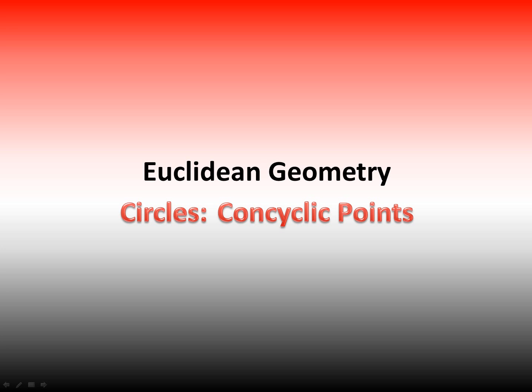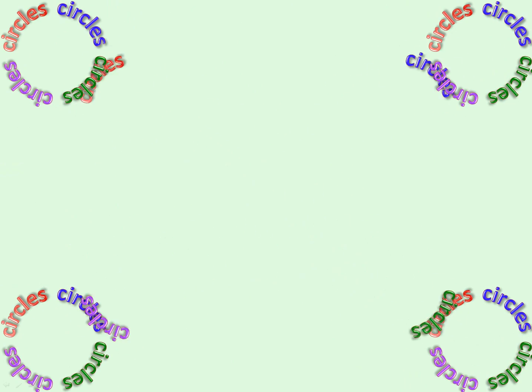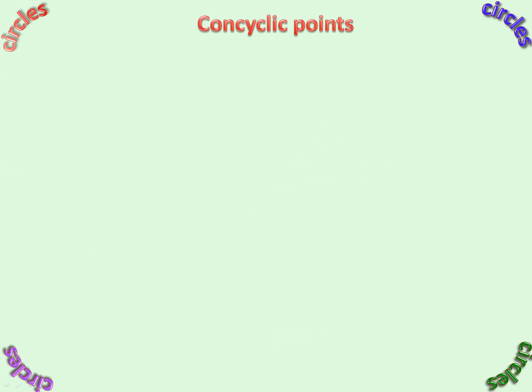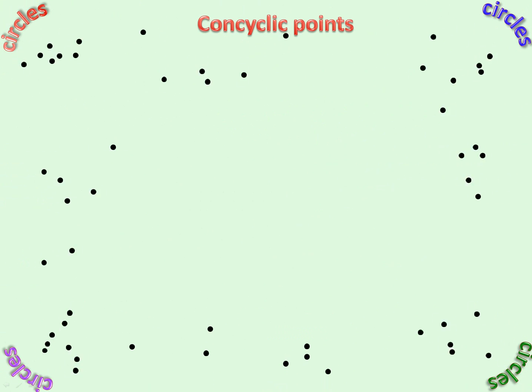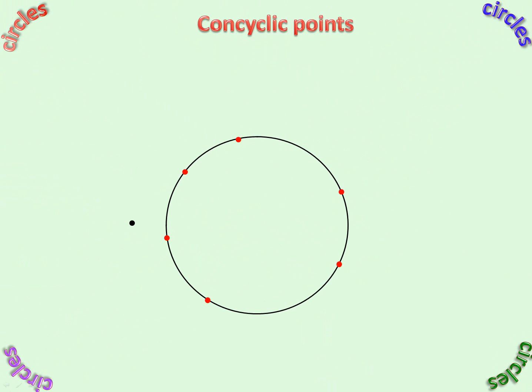Circle Geometry: Concyclic Points. What we mean by concyclic points is points that lie on a circle — 'con' meaning sharing, 'cyclic' meaning circle.